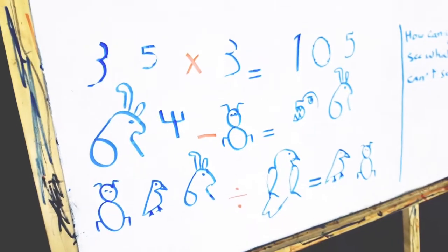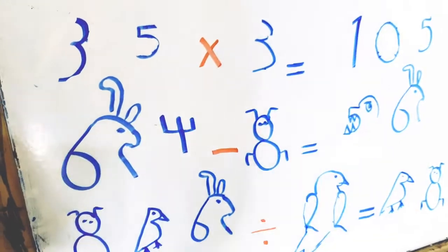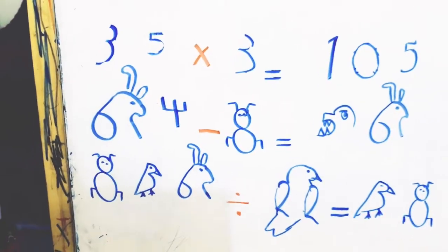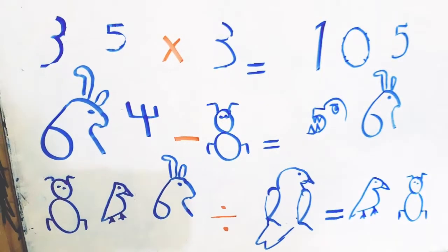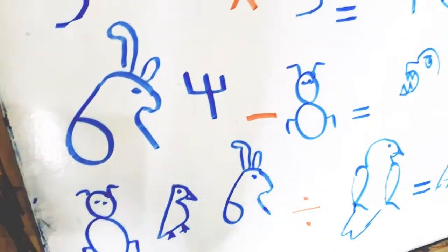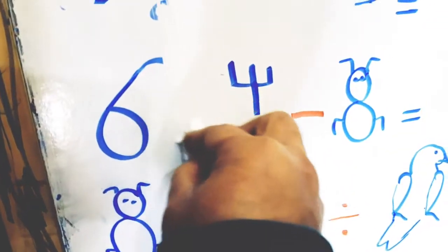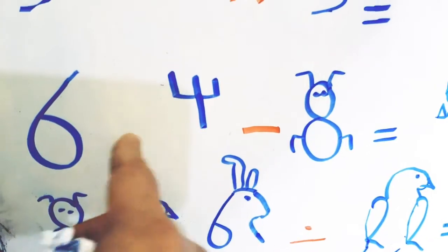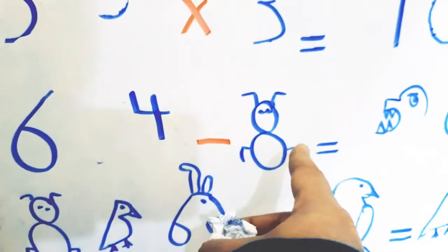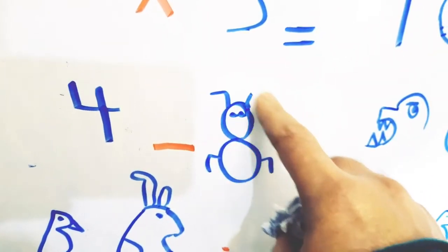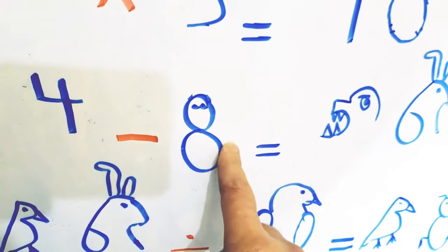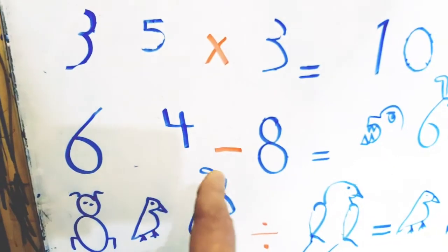Let's move to the second example. We have two drawings minus one drawing, and the remainder is two drawings. We will delete or clear out some parts of the drawings before us in order to reach the correct answer. Let's begin with this animal — it's a rabbit. We will clear out or delete some parts.